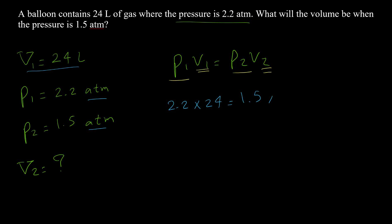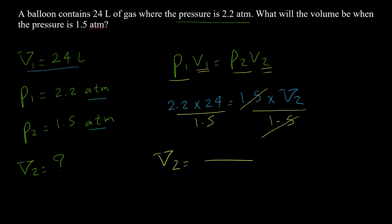The final pressure p2 is 1.5, and we don't know v2. Dividing both sides by 1.5, the 1.5 values cancel, so volume v2 = (2.2 × 24) / 1.5, which equals 35.2 liters. The unit for the answer is liters because the initial volume was in liters.